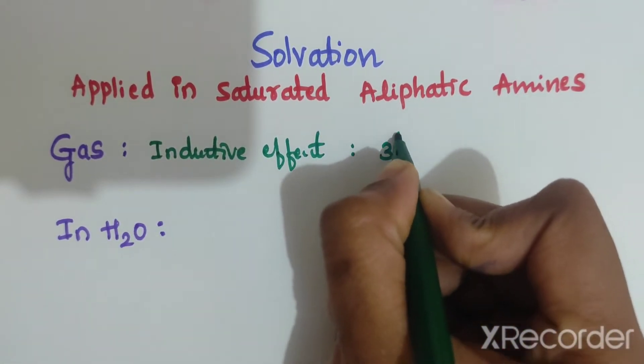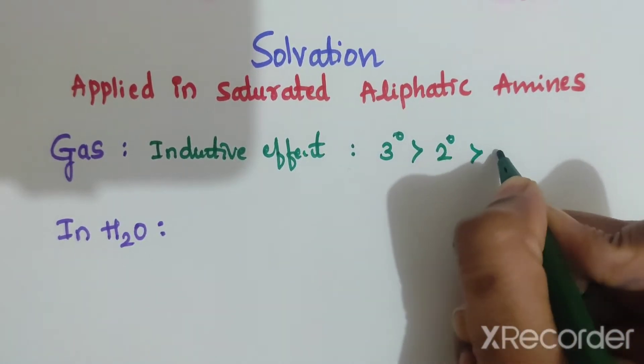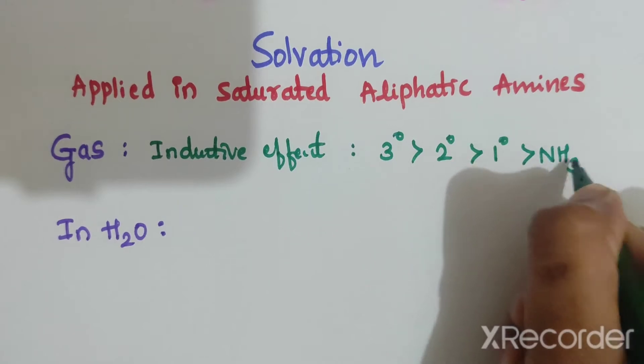Hence, the tertiary is more basic than secondary amine, which is more basic than primary, and which is more basic than ammonia.